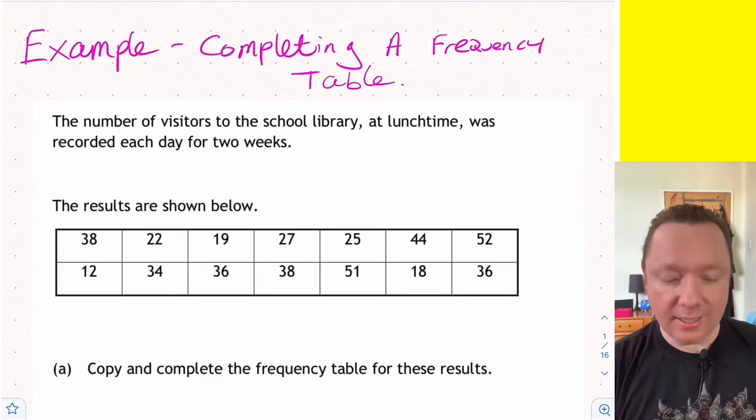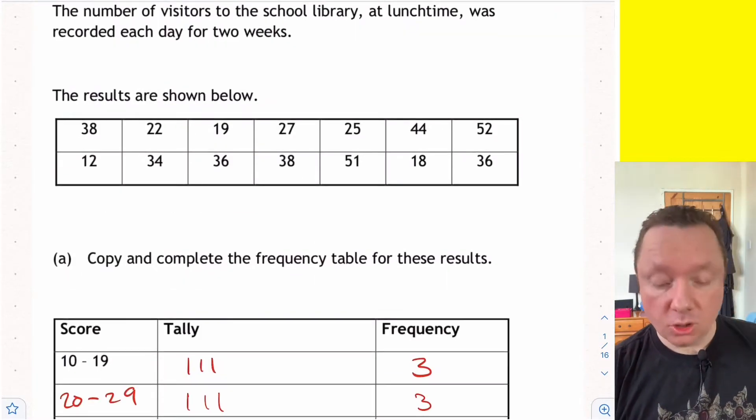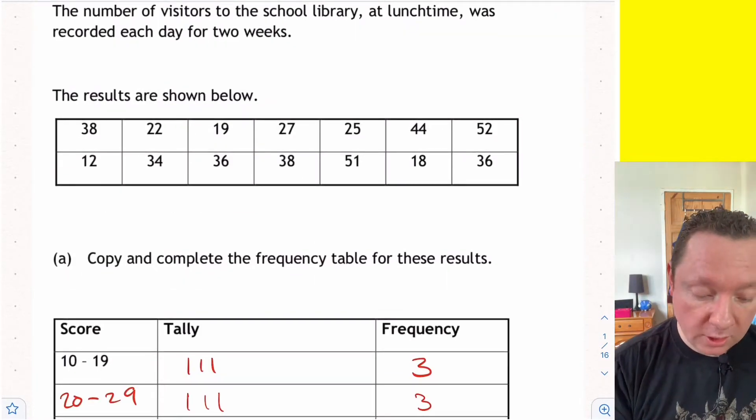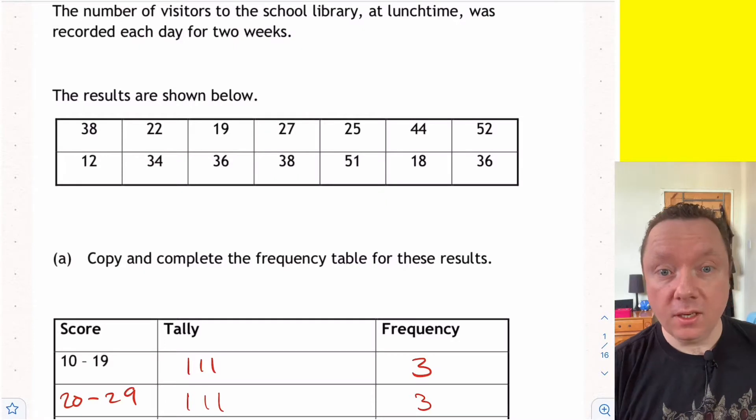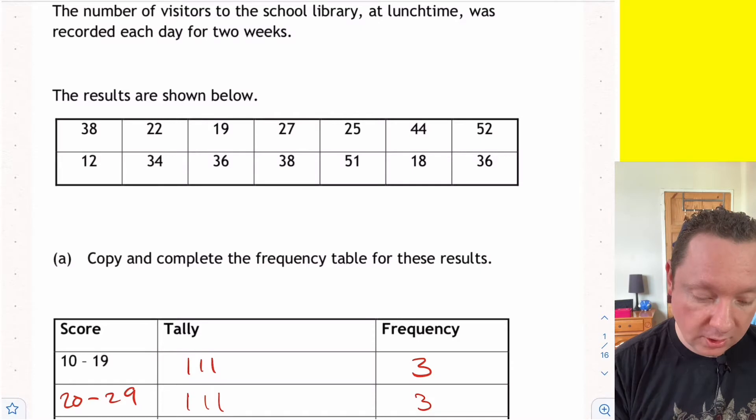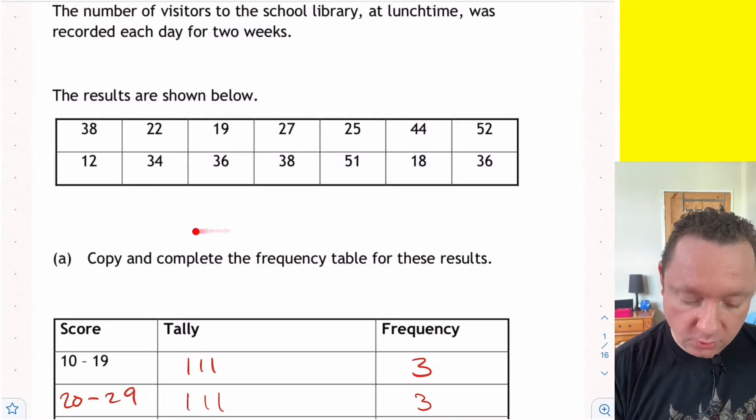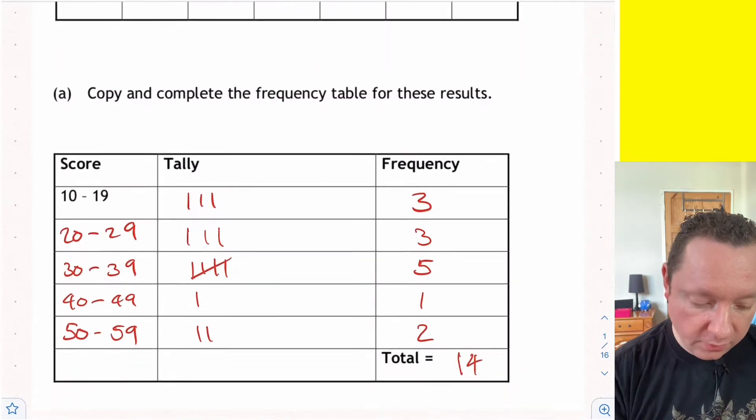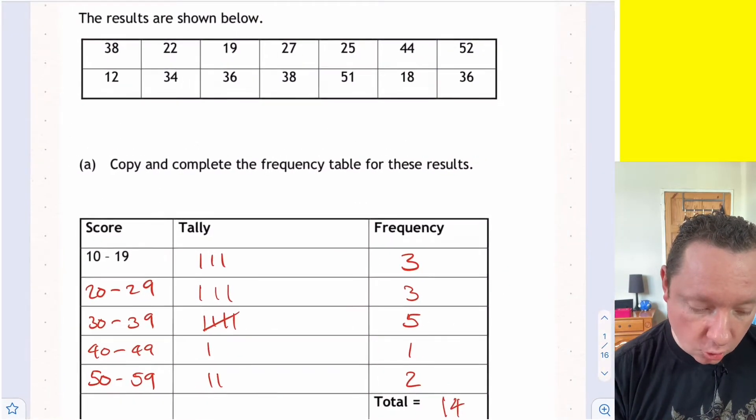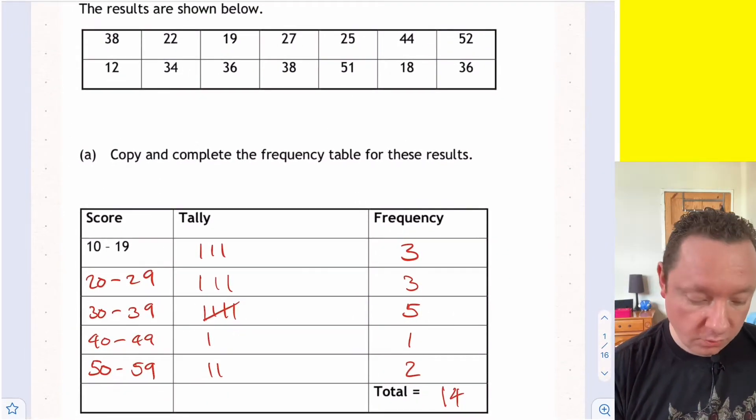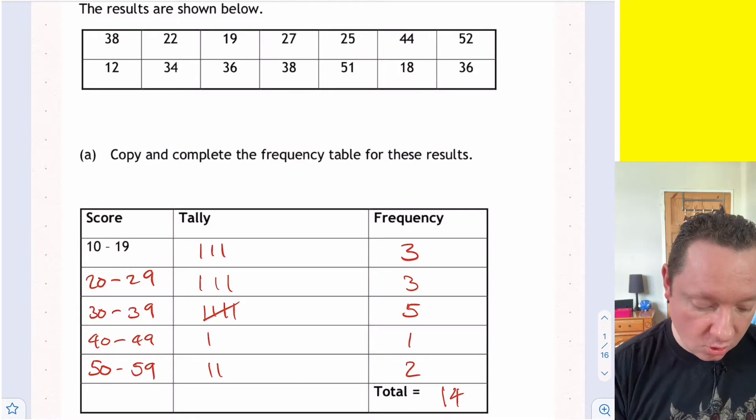So let's just jump straight into an example. The number of visitors to a school library at lunchtime was recorded each day for two weeks. Here's the results in the table, and we have to copy and complete the frequency table for these results. Now I've already filled it in, but I'll show you where I got my answers from.